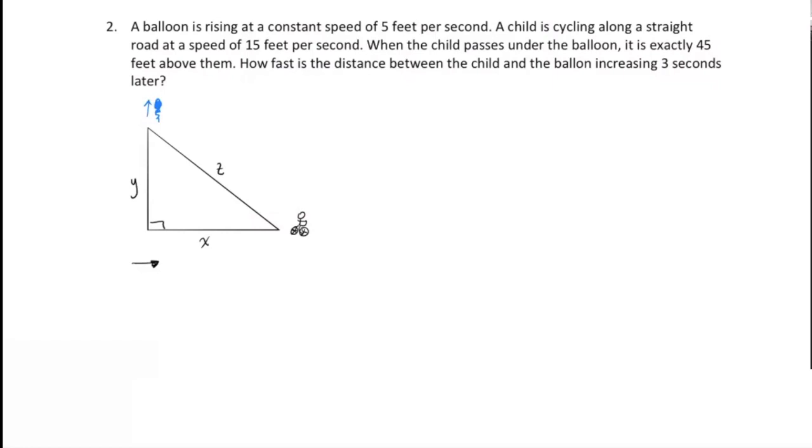So let's look at what we're given. Actually, first, let's start with our goal. How fast is the distance between the child and the balloon increasing three seconds later? So the distance between the balloon and the child is here, Z. So our goal is find dZ/dt when t equals three seconds.